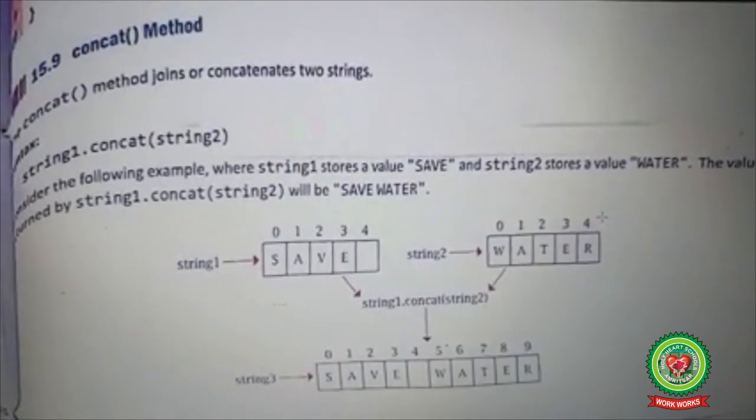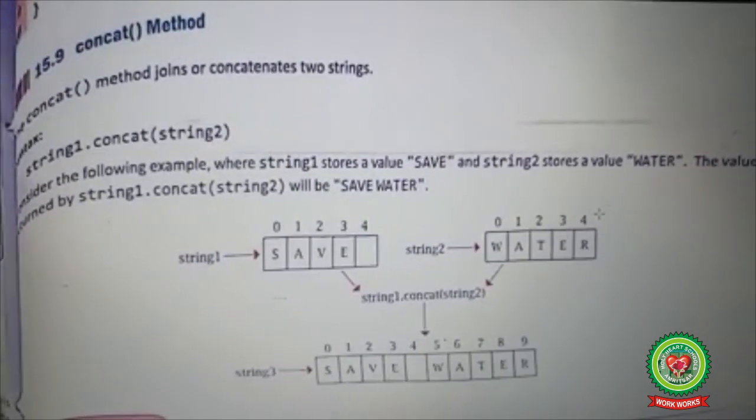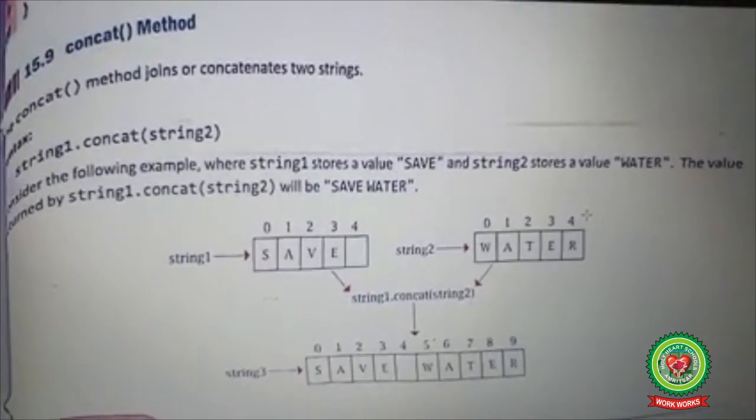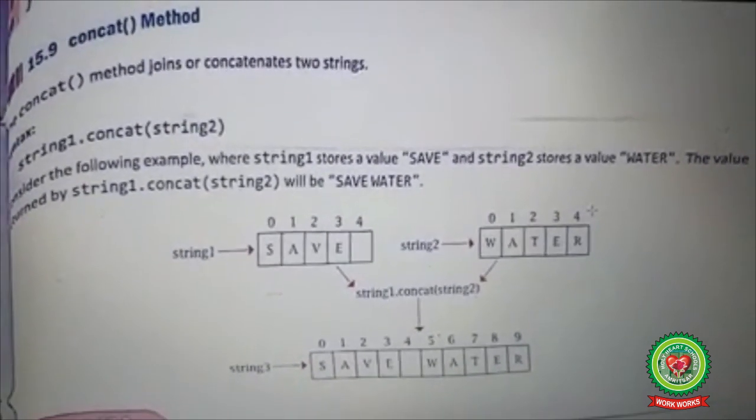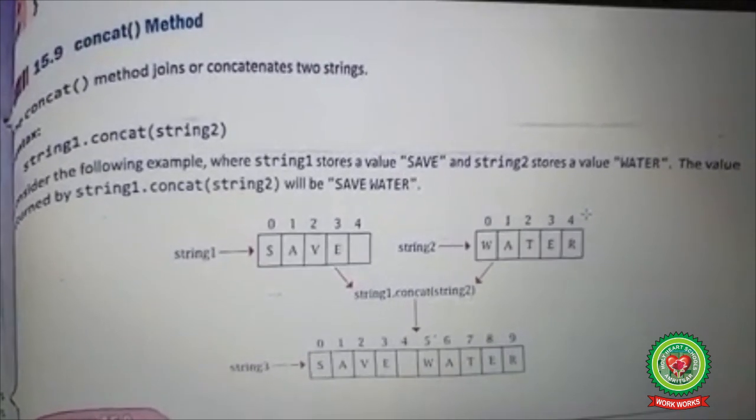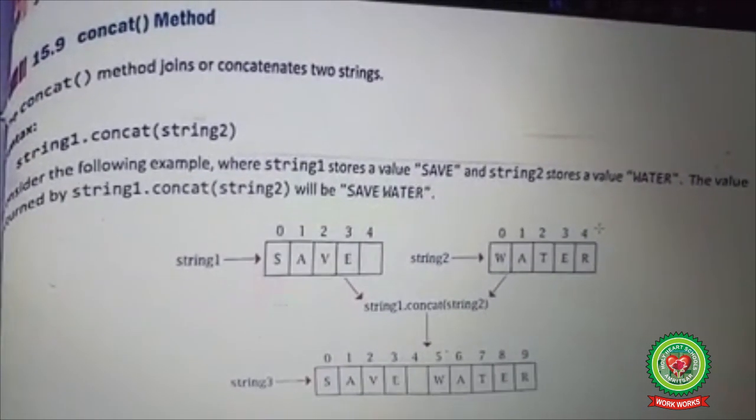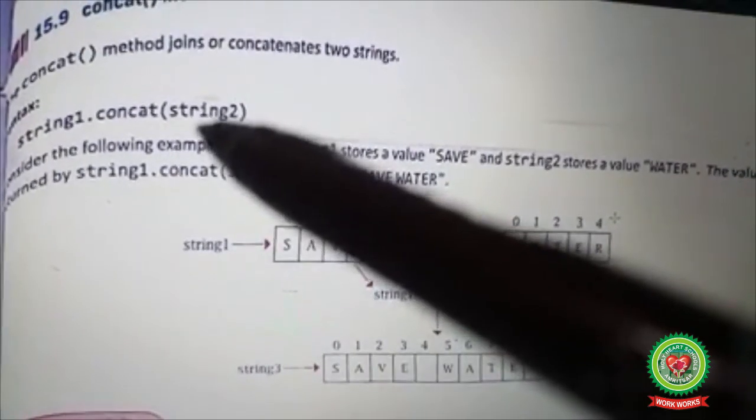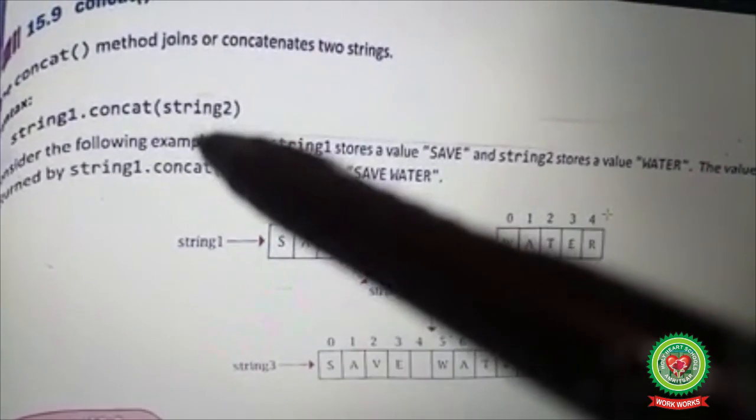Open your book at page 405. Concat method. The concat method joins or concatenates two strings. Its syntax is string1.concat(string2).